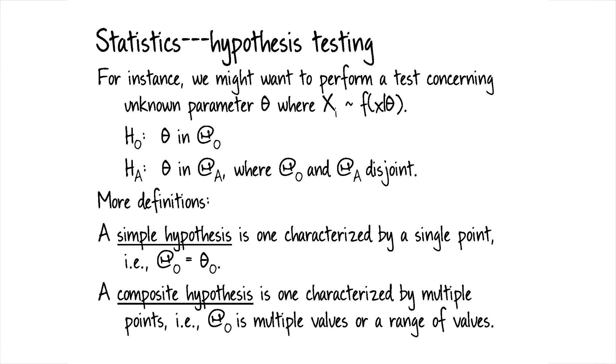A simple hypothesis, as I just said, is one characterized by a single point. So where theta naught lives is just equal to one point. A composite hypothesis is one characterized by multiple points or a range of values.